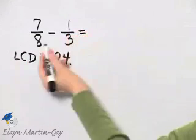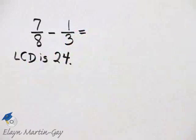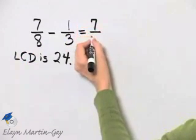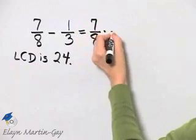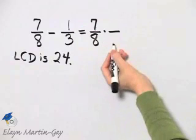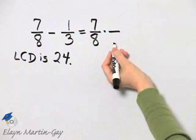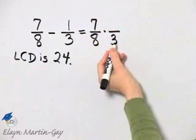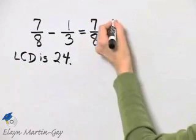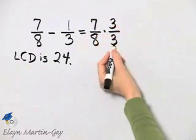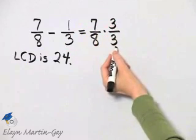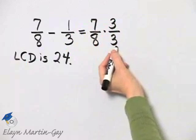So we need to write each fraction as an equivalent fraction, but with a denominator of 24. We'll begin with the first fraction. What do I multiply 8 by in order to have a product of 24? I multiply 8 by 3, and if I'm multiplying by 3 in the denominator, I've got to multiply by 3 in the numerator so that I'm in essence multiplying by 1.